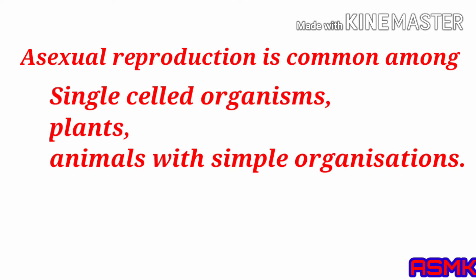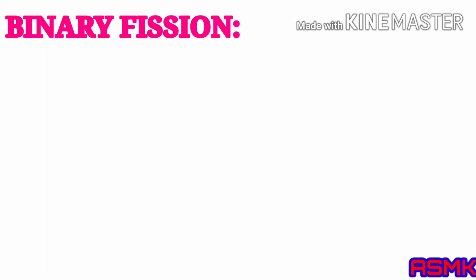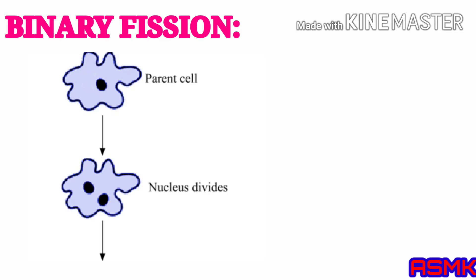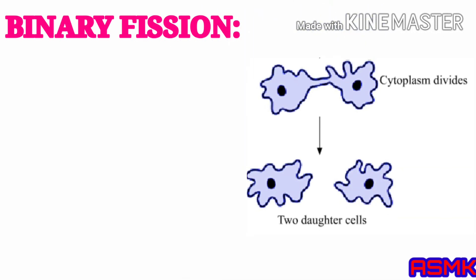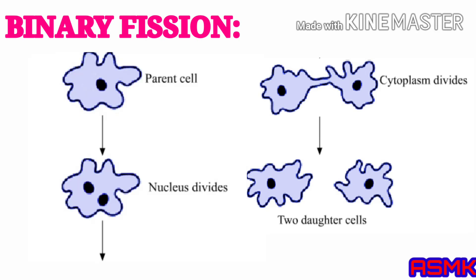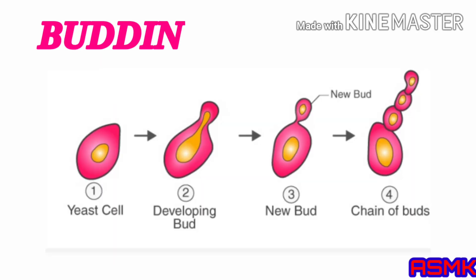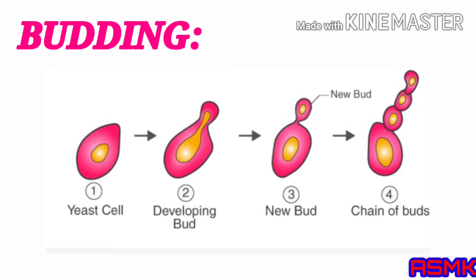Binary fission: in single-celled organisms, the cell divides into two halves, each rapidly growing into an adult. Examples are Amoeba and Paramecium. Budding: in yeast, cell division is unequal; small buds are produced, which remain attached initially to the parent cell and eventually get separated and mature into new yeast cells.